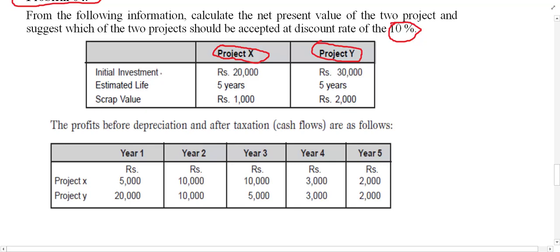The information given: initial investment for Project X is 20,000 and for Project Y it is 30,000. Initial investment simply means the cost of the project. Estimated life for both is 5 years. Scrap value or salvage value at the end is 1,000 for Project X and 2,000 for Project Y.